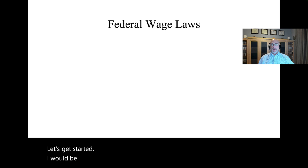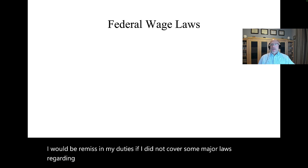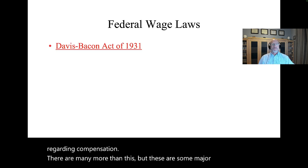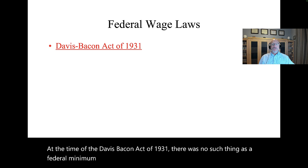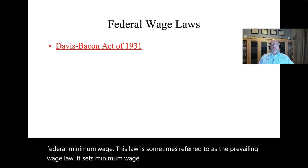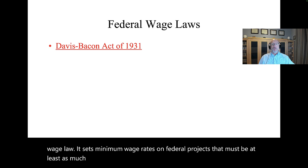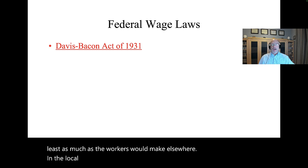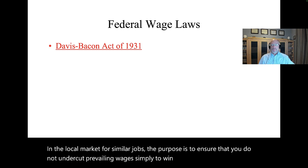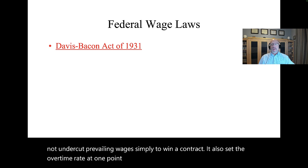I would be remiss if I did not cover some major laws regarding compensation. There are many more than this, but these are some major ones. At the time of the Davis-Bacon Act of 1931, there was no federal minimum wage. This law is sometimes referred to as the prevailing wage law. It sets minimum wage rates on federal projects that must be at least as much as the local prevailing rate. It also set the overtime rate at 1.5 times the prevailing rate for more than 8 hours per day or more than 40 hours per week.